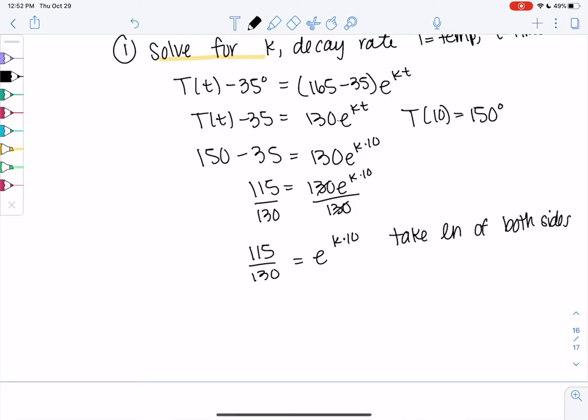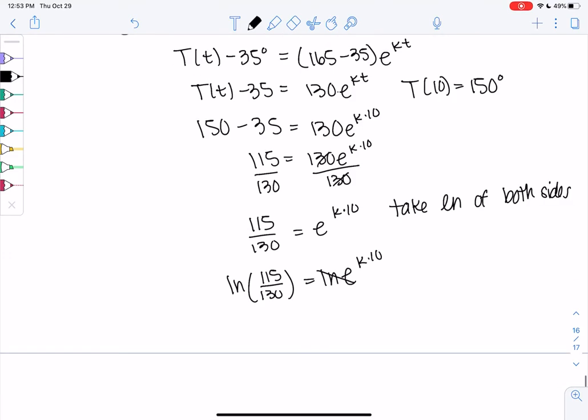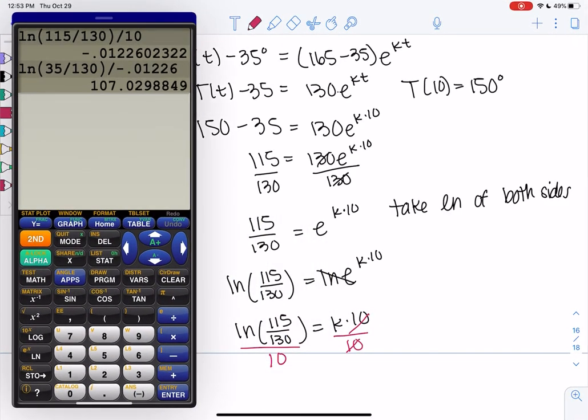All right, we don't have matching bases like we did in 6-3. Only really one side has an exponent, so ln of both sides. We'll solve this. So ln of 115 over 130 equals ln of e to the k times 10. We've learned that ln and e cancel out, so we just get k times 10 on the right side. So we'll go ahead and divide by 10 to solve for k. This is my exact value of k, but we can go ahead and approximate. Just keep a lot of decimal places.